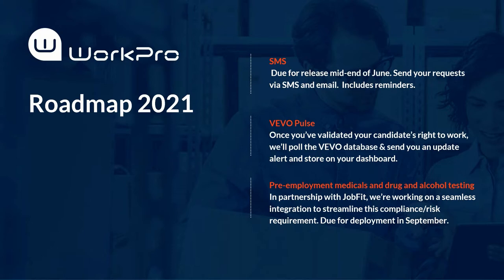Just before I get started, a little sneak peek of Work Pro's roadmap leading up to the end of about September this year. The latest additions: one is SMS, which we're currently piloting and is due for release at the end of June. Vivo Pulse — for those who use Work Pro for work rights and citizenship checks — once you've sent a work rights request and got your result, rather than setting a reminder to recheck someone, our system will continuously poll the Vivo database and send alerts of any change of status. And we've partnered with a company called Job Fit, working on a seamless integration for pre-employment medicals and drug and alcohol testing through Work Pro.